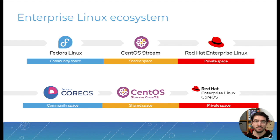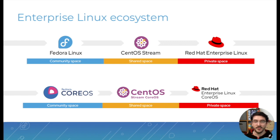Looking at the entire Enterprise Linux ecosystem: Fedora Linux flows into CentOS Stream every couple of years, and what gets into CentOS Stream goes into the next major version of Red Hat Enterprise Linux. We follow the same idea with Fedora CoreOS, which is the upstream for CentOS Stream CoreOS, and everything that goes into CentOS Stream CoreOS goes into Red Hat Enterprise Linux CoreOS.